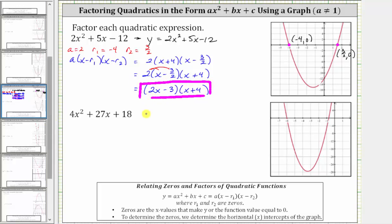Now to factor the next expression, we graph y equals four x squared plus 27 x plus 18, which I've already graphed here on the right. Once again, notice how we have two horizontal intercepts, and therefore we are going to have two binomial factors. The ordered pair for the horizontal intercept on the left is negative six comma zero. It's unclear what the ordered pair would be for the other point, and therefore we go back to the graphing calculator.